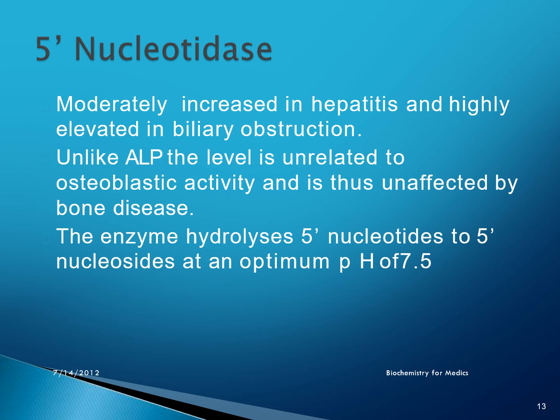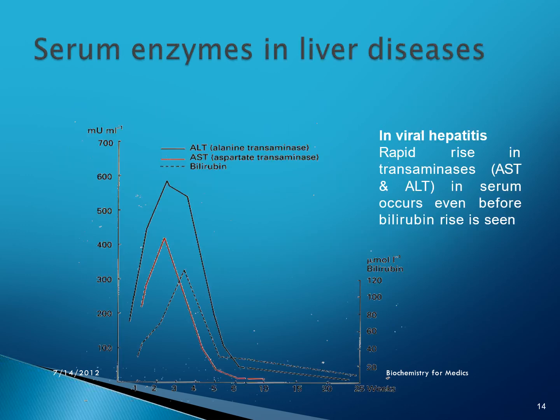5'-nucleotidase is moderately increased in hepatitis and highly elevated in biliary obstruction. Unlike alkaline phosphatase, its level is unrelated to osteoblastic activity and is thus unaffected by bone disease. The enzyme hydrolyzes 5'-nucleotides to 5'-nucleosides at an optimum pH of about 7.5. A graph illustrates the various serum enzymes in liver diseases; in viral hepatitis, there is a rapid rise in transaminases in serum even before bilirubin rises.